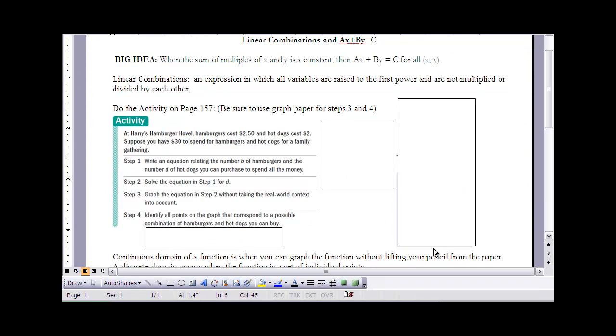This is the notes for Section 3.2, Linear Combinations and AX plus BY equals C. If you haven't done so already, make sure you stop the video and read Section 3.2 before going on. The big idea here is that we're looking at the sum of the multiples of X and Y. If that's equal to a constant, we can write it in the form AX plus BY equals C for all ordered pairs X, Y.